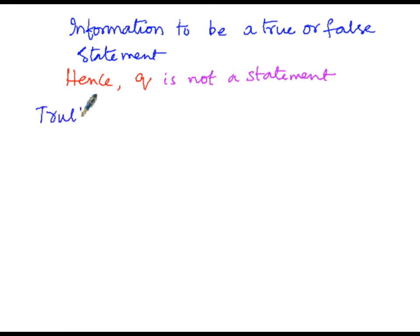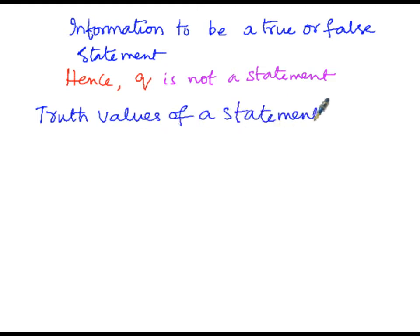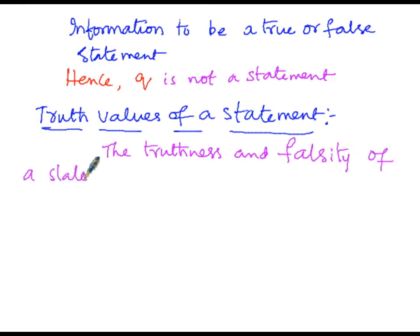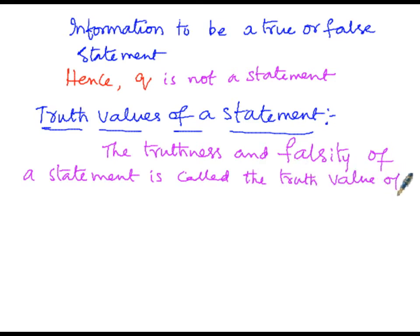Now regarding truth values of a statement: the truth value of a statement is the truthness or the falsity of that statement. The truthness and falsity of a statement is called the truth value of that statement. Let us now perform a few illustrations under this topic.